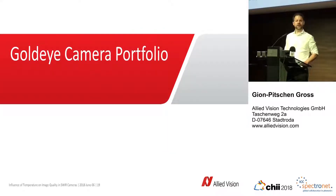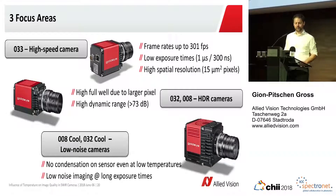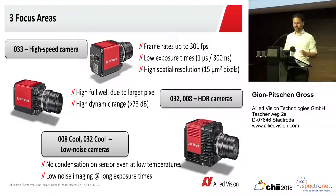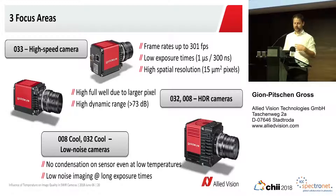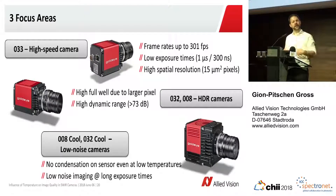Just a few words about our InGaAs camera portfolio, which is often used in hyperspectral imaging. We have three focus areas. One is our high-speed cameras, the O33, which is a VGA InGaAs camera with frame rates up to 301 frames per second, low exposure times, and because of the small pixels, a large spatial resolution. Then we have our HDR cameras with large pixels — the VGA cameras at 25 micrometers and the QVGA camera, the 008. And then we have a larger housing which also offers a fan for additional cooling. It has an evacuated sensor chamber, so there is no condensation on the sensor even at low temperature, and because we can achieve lower temperatures in this housing, we get usually less noise in those cameras.